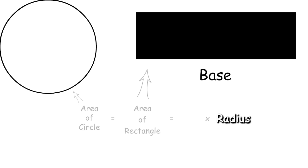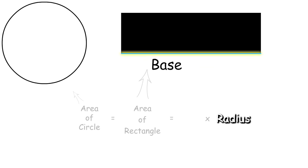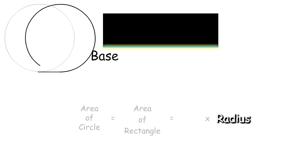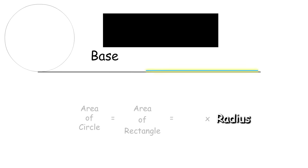To find the base, we need to look at the circumference of the circle. And when we compare the base and the circumference, we can see that the base is equal to one-half the circumference.